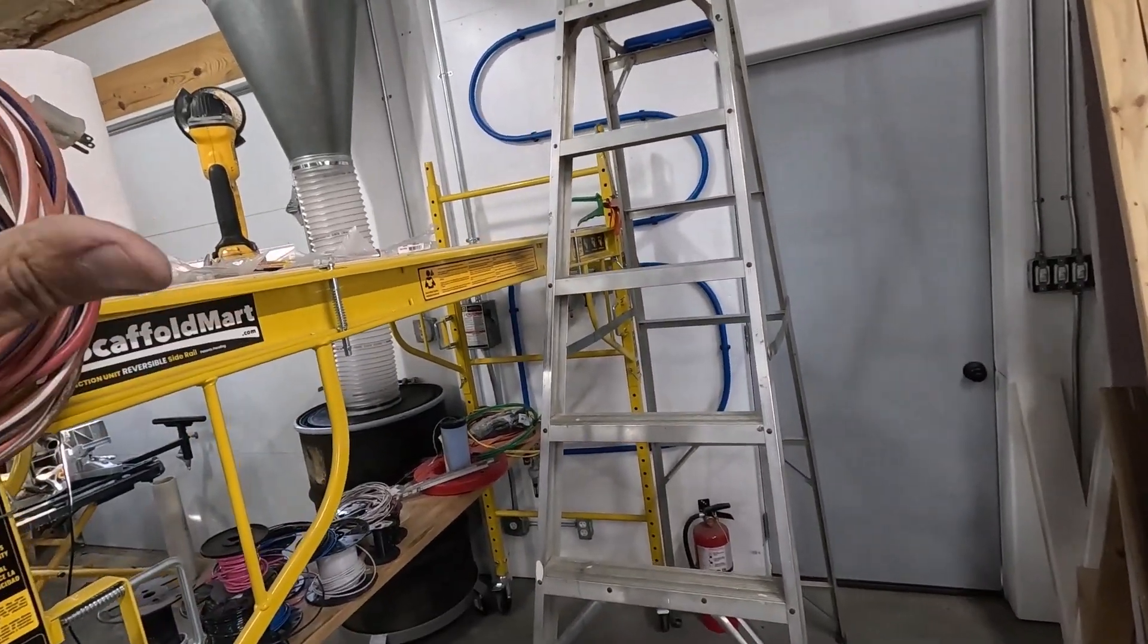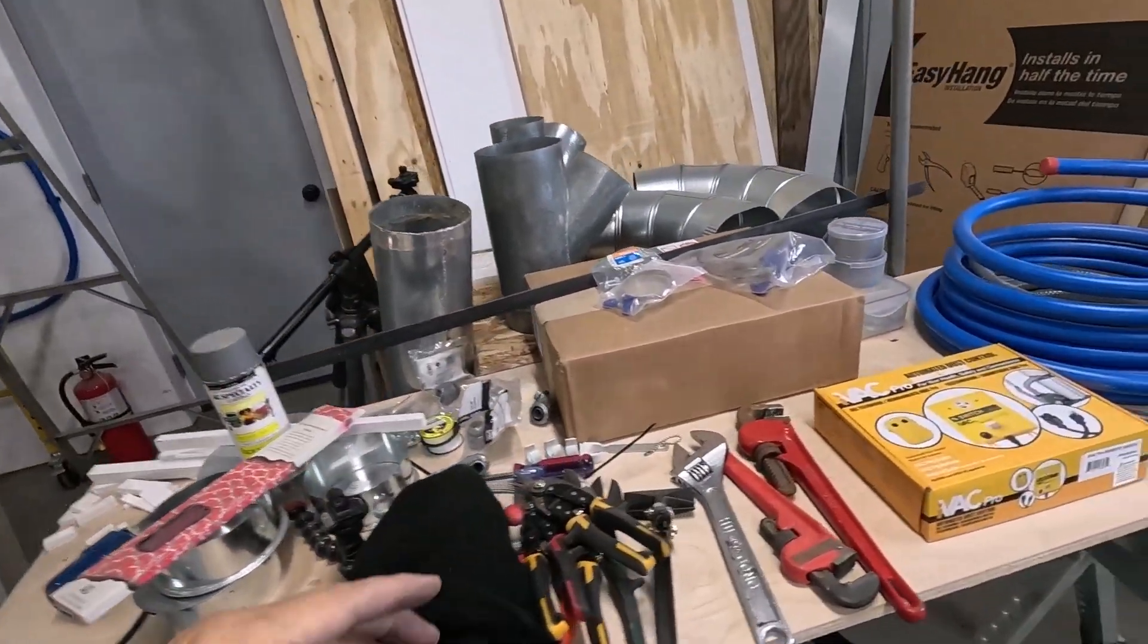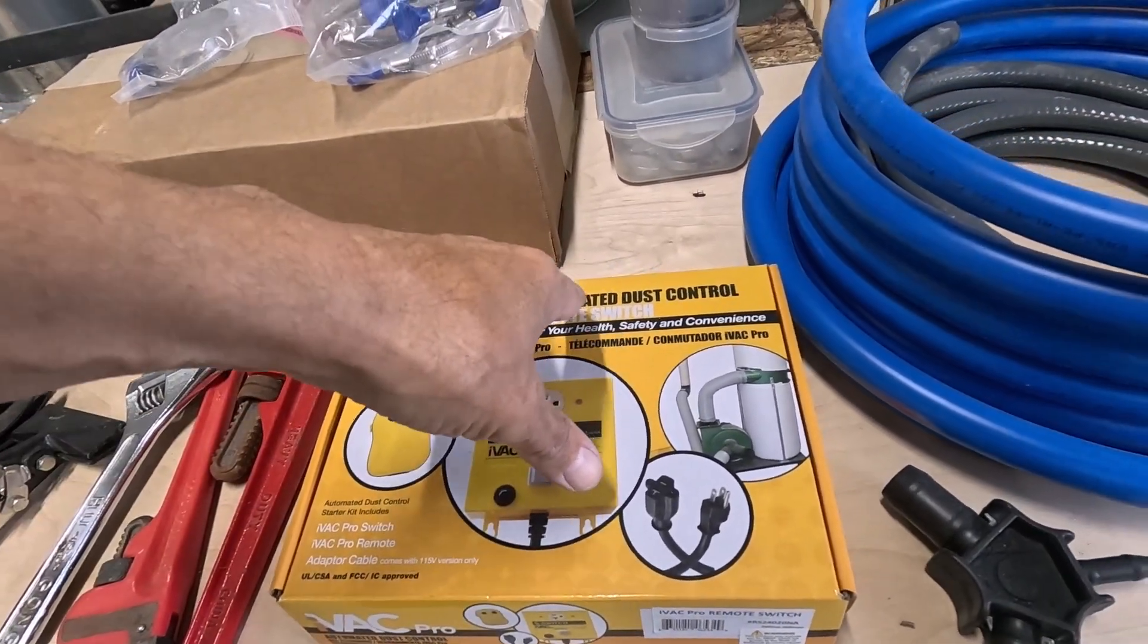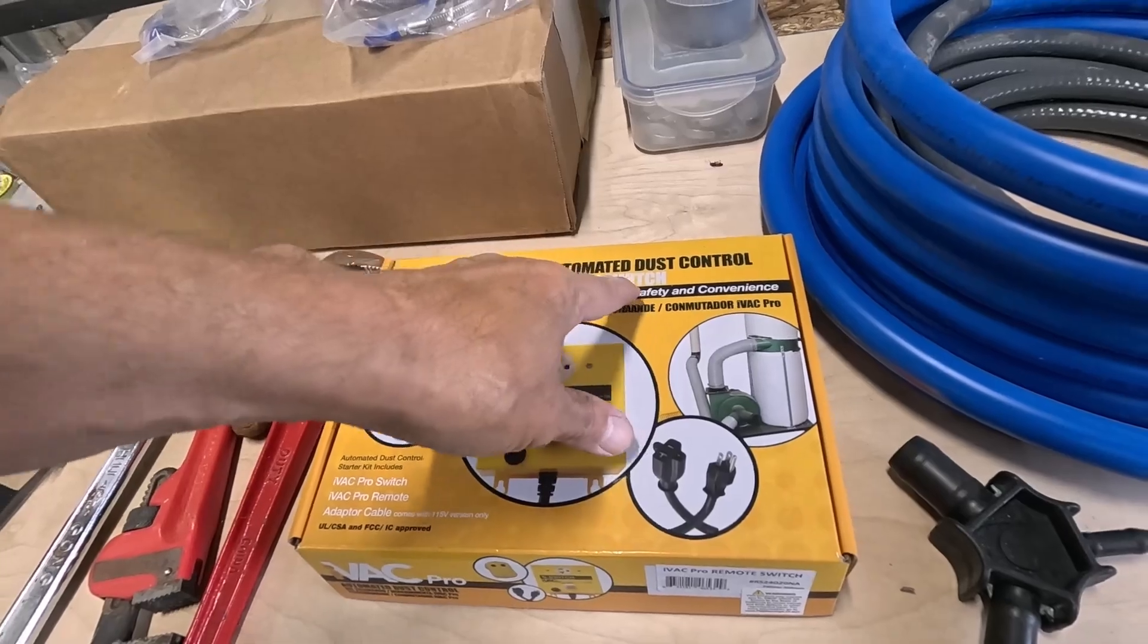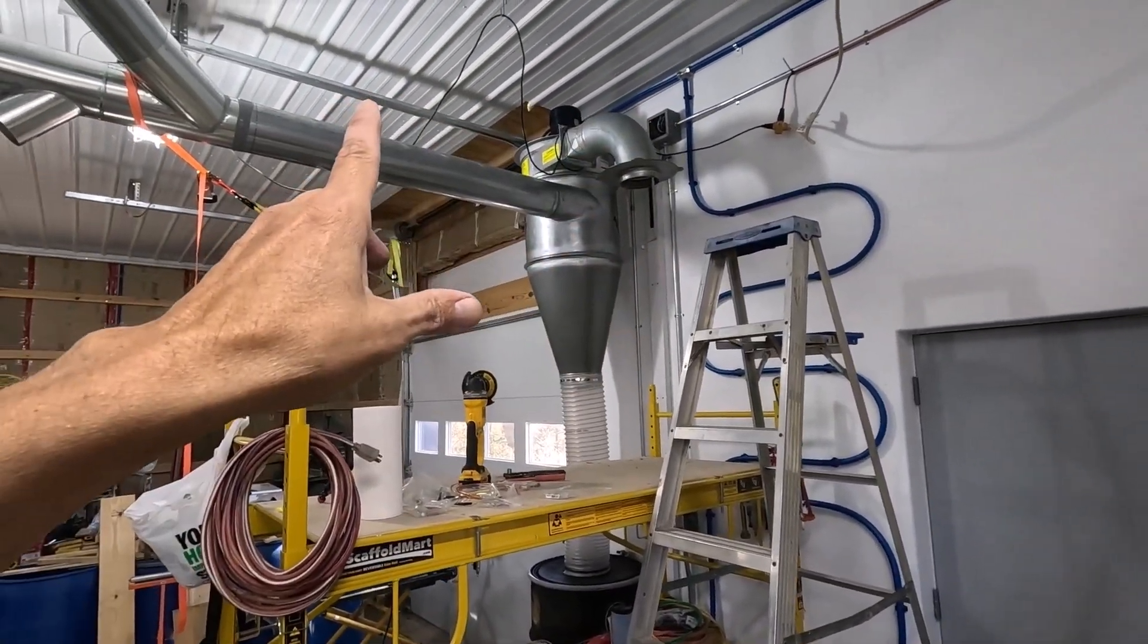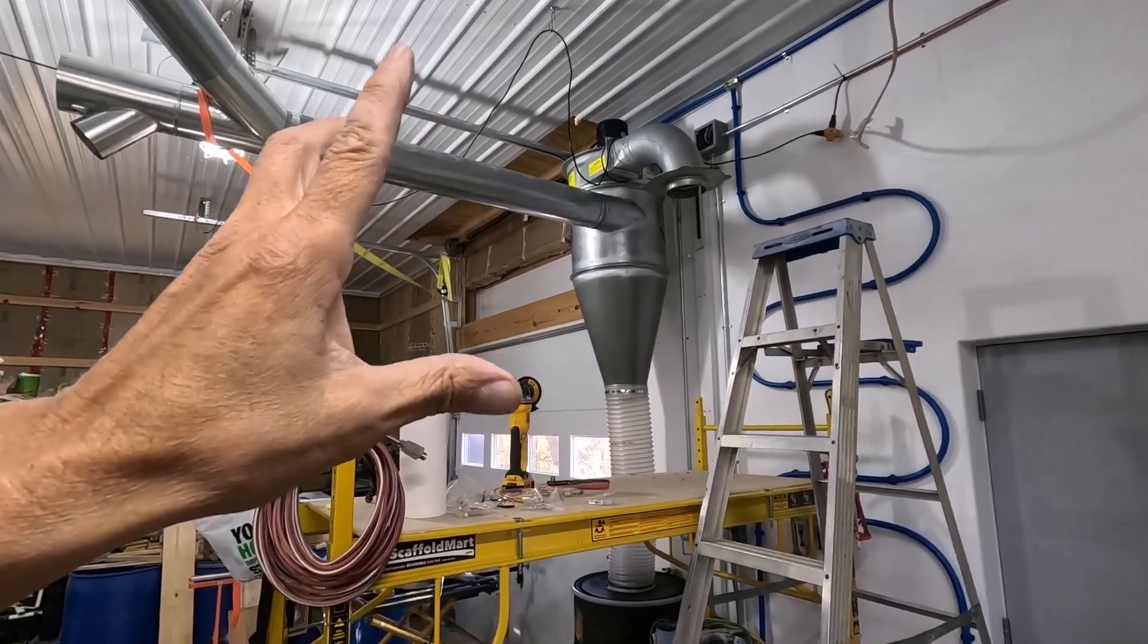While I have the scaffolding here, I'm going to be putting this IVAC Pro automated dust control remote switch. I'll be putting that on the wall up there and connecting the system to that.